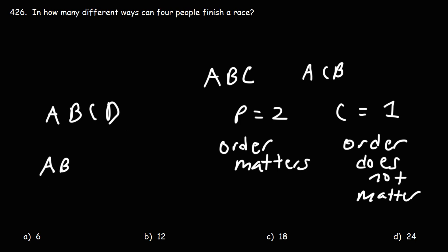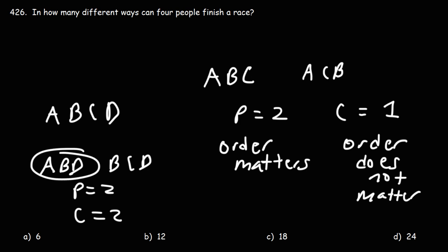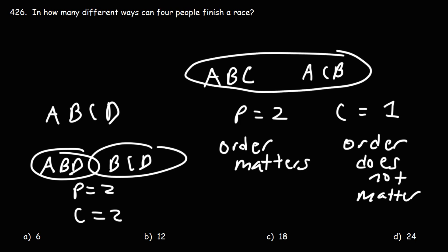Now if we were to choose ABD and BCD, these are two different permutations and also two different combinations because the letters are not the same — they're different. Compare that to ABC and ACB, which are two different permutations but only one combination.